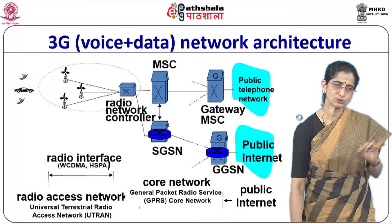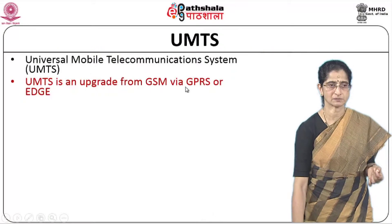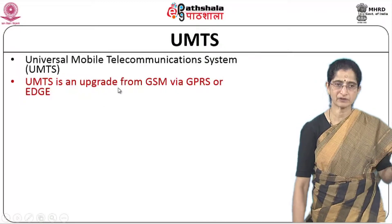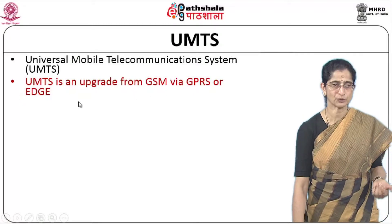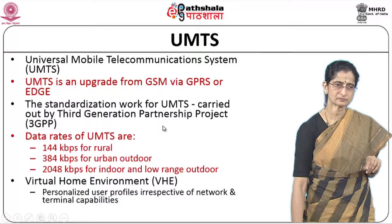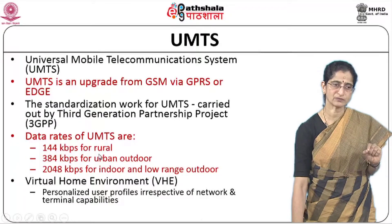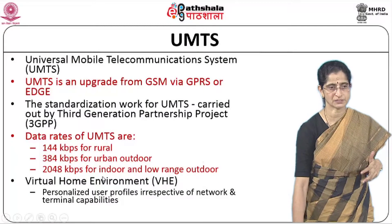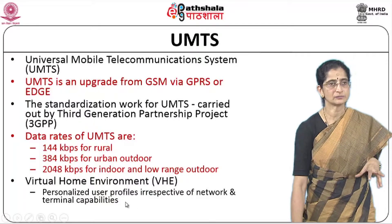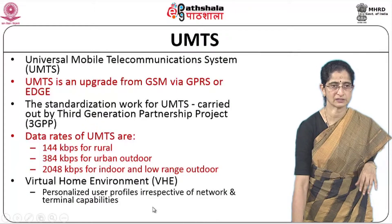UMTS stands for Universal Mobile Telecommunication Systems. It is an upgrade from GSM via GPRS or EDGE, and standardization was carried out by the Third Generation Partnership Project. Different data rates are supported in UMTS: 144 kbps for rural, 384 kbps for urban outdoor, and 2048 kbps for indoor and low-range outdoor. It also supports Virtual Home Environment (VHE), which provides personalized user profiles irrespective of network or terminal capabilities.